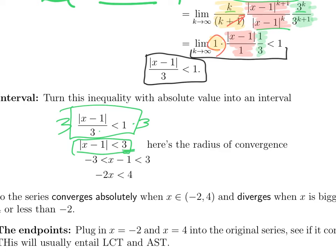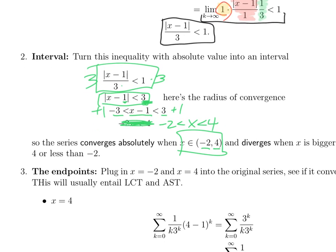We just try and isolate the absolute value. So, we multiply both sides by 3, and we get absolute value of x minus 1 is less than 3. That makes 3 the radius of convergence. The interval is centered at 1, and has a radius of 3. So, you can either right away say that's all the points from 1 minus 3 to 1 plus 3. Or, you can remember that if the absolute value is less than 3, then the quantity is between 3 and minus 3. And then add 1 to all three sides, minus 2 is less than x is less than 4. So, we know that the series converges absolutely when x is in this interval, minus 2 to 4, and diverges when x is bigger than 4 or less than minus 2.